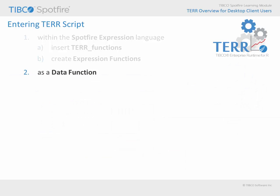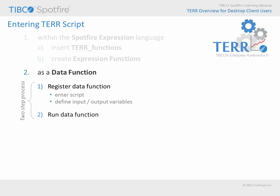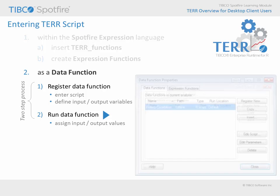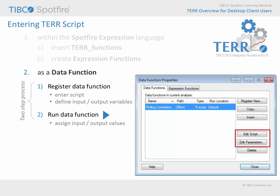An alternative to entering TERR script in Expressions is to create a data function. Creating data functions is a two-step process. First, you register the data function, which involves entering the script and defining the input and output variables described within that script. Once you have the data function defined, it's time to run it. The first time you run the data function, you will have to assign the input and output values associated with your current analysis document — for example, which columns or property values will serve as input, and whether the output should be returned as a new column, a new data table, or a new property value. Once these parameters are mapped, these definitions become part of the analysis document, which can be edited under the data function properties dialog. Running the data function also causes the instructional script to be processed on the TERR statistical engine.